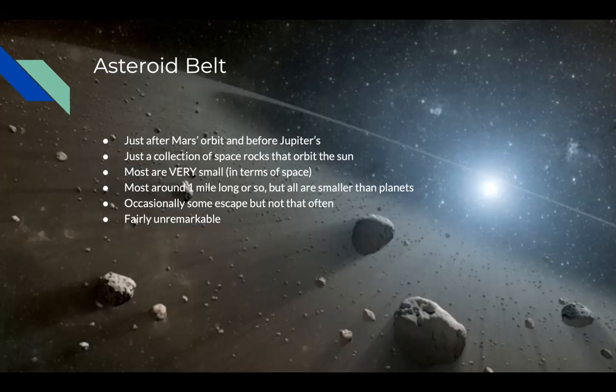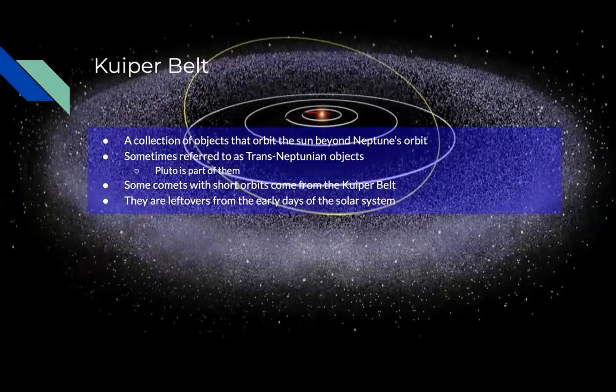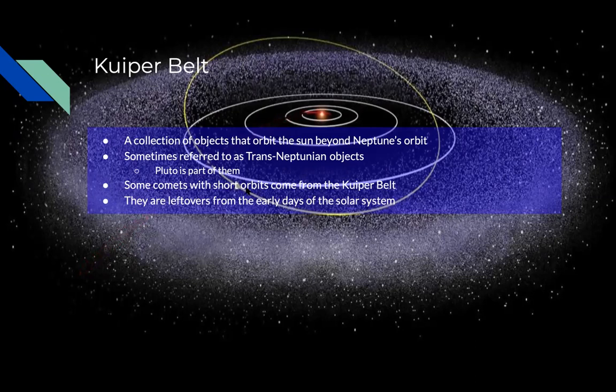The Kuiper belt — you can think of this as a secondary asteroid belt. It orbits the sun beyond Neptune. Most of the objects in the Kuiper belt are referred to as trans-Neptunian objects because they lie beyond Neptune. Pluto is part of them, as it's not classified as a planet. Some comets with very short orbits come from the Kuiper belt. These comets and pretty much everything in the Kuiper belt are just leftovers from the early days of the solar system, from when the solar system formed.